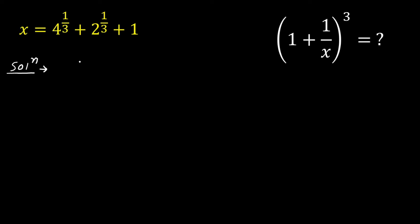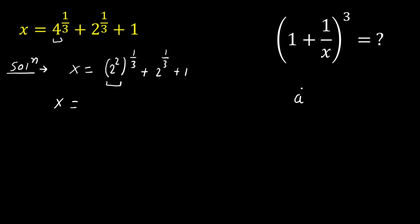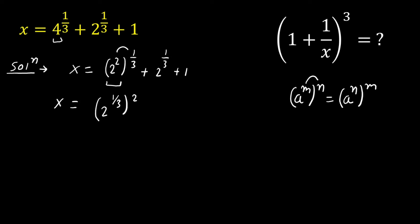Look carefully. Here x equals — this 4 is the same as 2² — so we write it as (2²)^(1/3) + 2^(1/3) + 1. Now applying the base and exponent rule: a^m^n = a^(n·m), where m and n are interchanged. Using this rule, the 2 and 1/3 are interchanged, giving (2^(1/3))² + 2^(1/3) + 1.